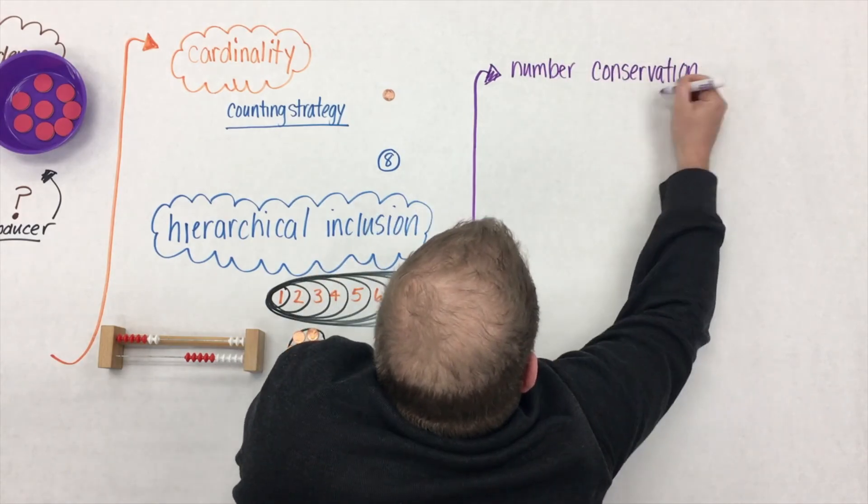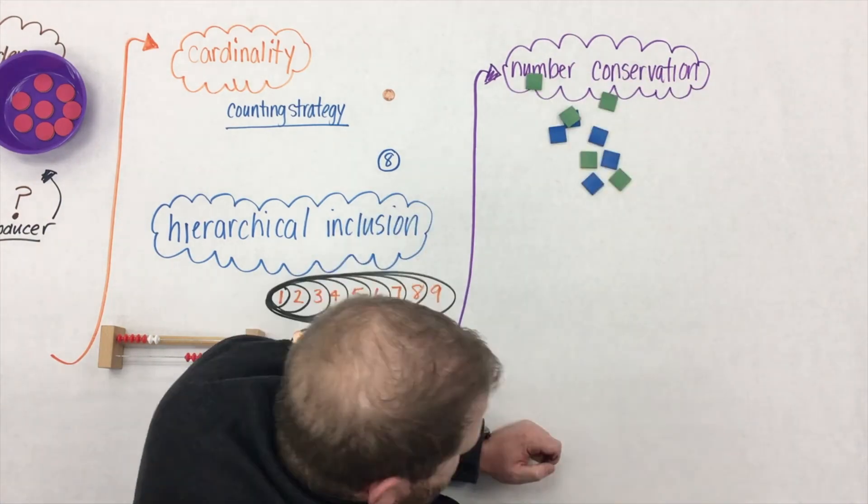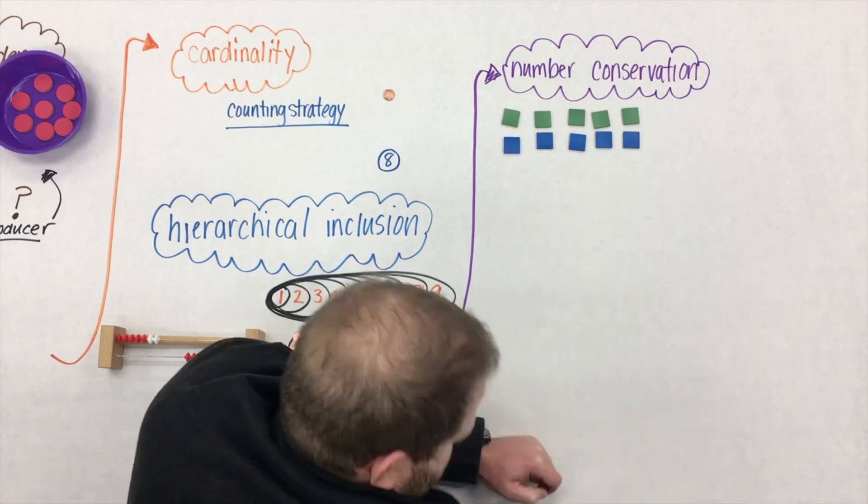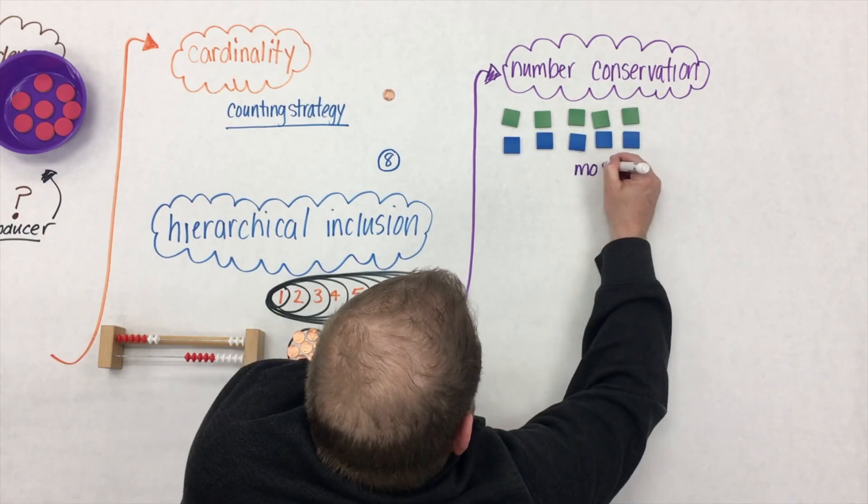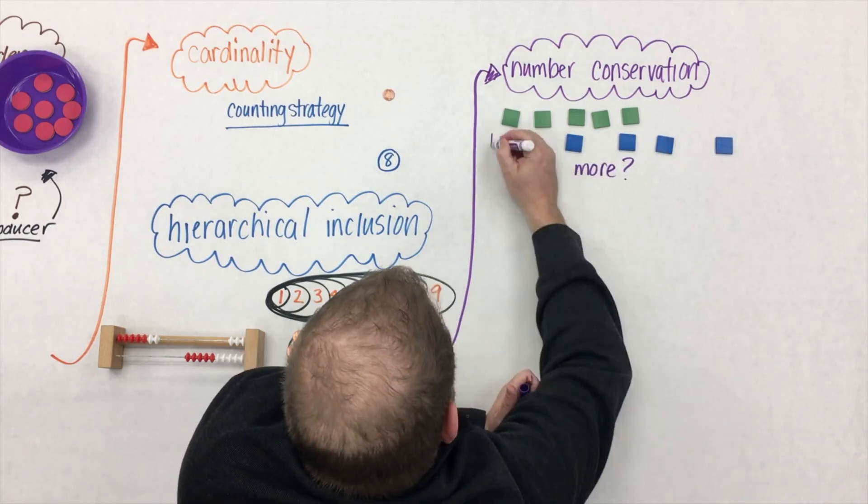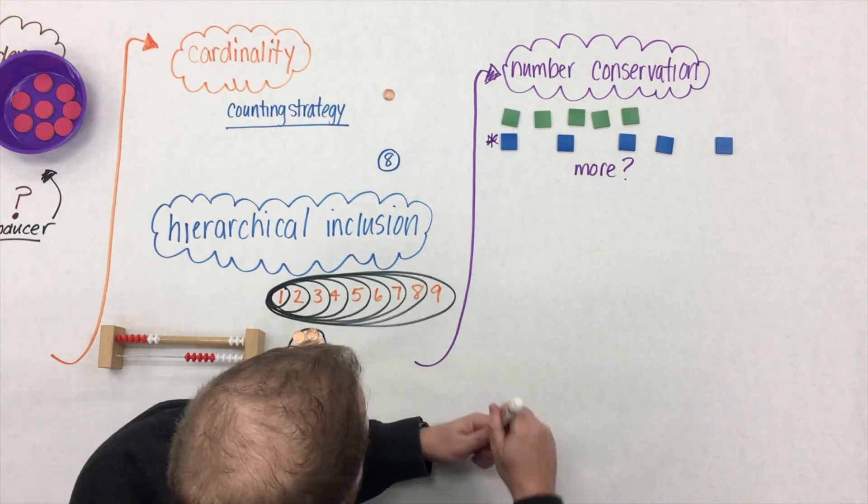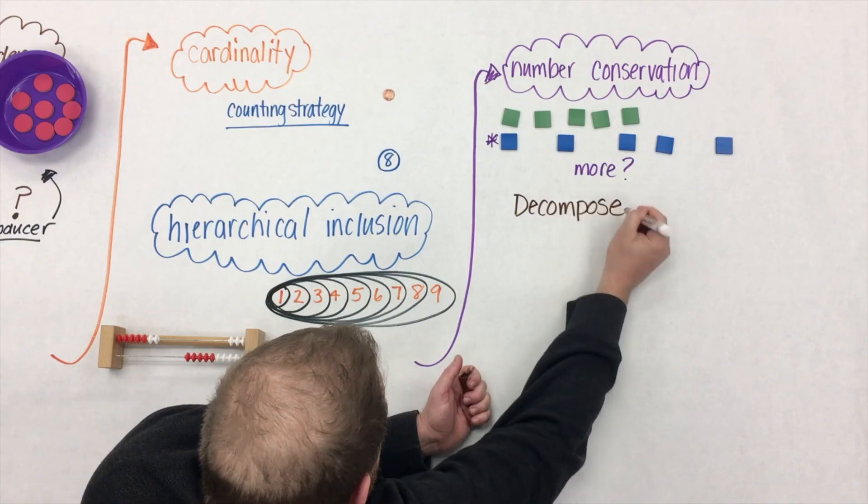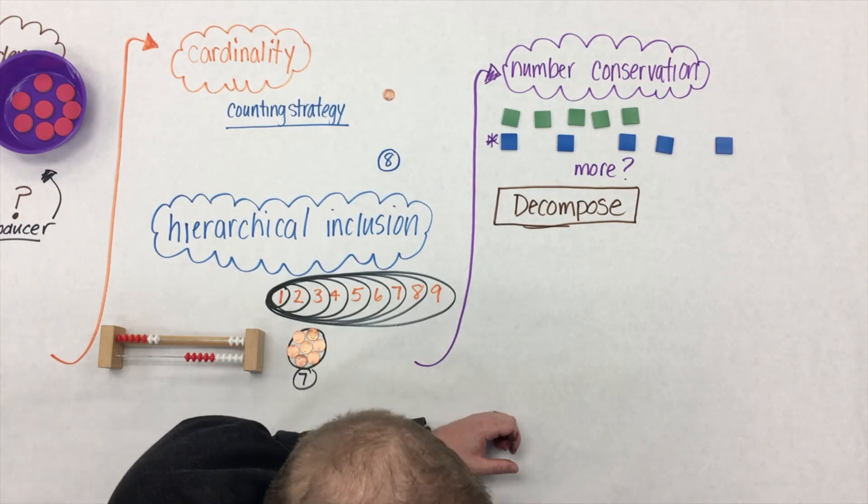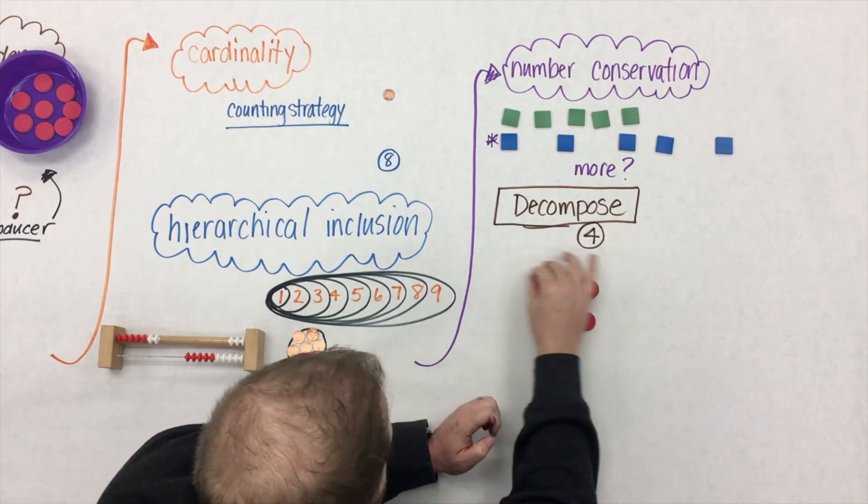At the final part of this progression of early numbering counting comes number conservation. The big idea here is that students understand that there's a decomposition of number. We might ask, are they the same? Students would say, yeah, we have the same number. But if we stretch out the blue row, and ask which one has more, students might say the blue. This is at the heart of number conservation. It's about decomposition, that numbers can be broken apart, and that numbers, the whole, is made up from parts.